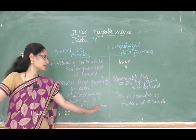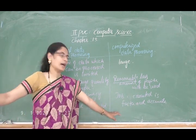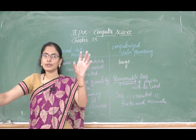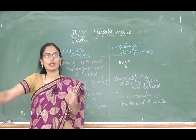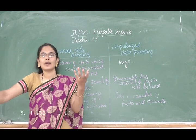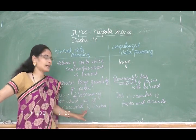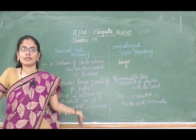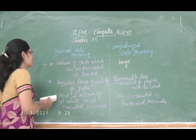In manual data processing, speed is very low and accuracy cannot be guaranteed because humans are involved — there may be chances of inaccuracy. Whereas in computerized data processing, the speed is very high and it is accurate. For example, bank balance calculations such as debit, credit, and interest rates are done correctly by the computer.